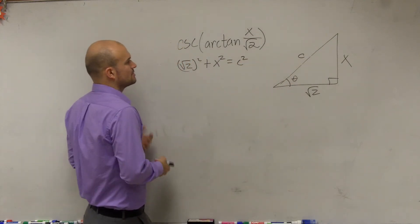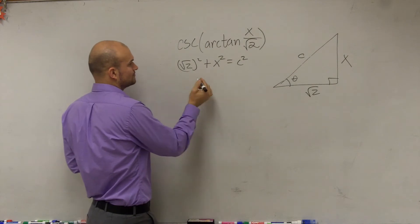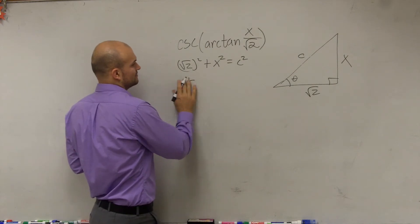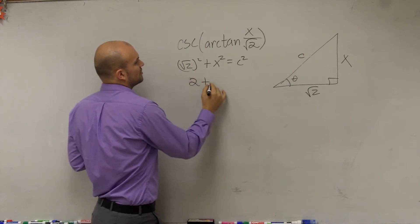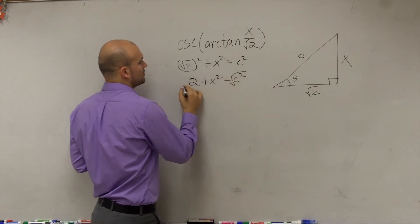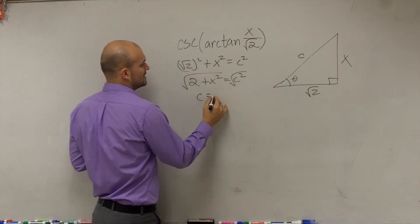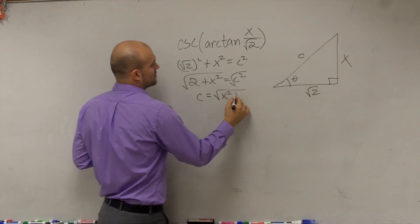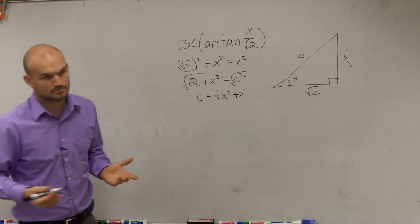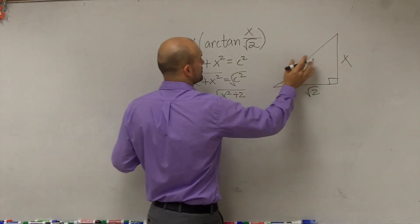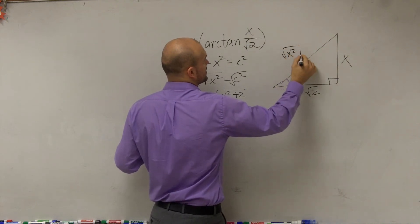Okay? So now all we have is, you could say 2 plus x squared equals c squared, root both sides, and therefore you get c equals the square root of x squared plus 2. All right? So then we'll put square root of x squared plus 2.